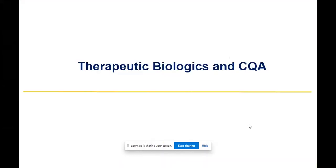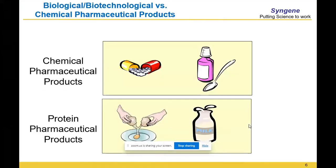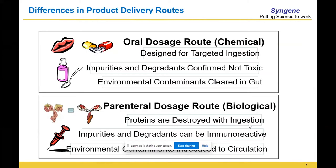When we talk of therapeutic biologics, you have got chemical pharmaceuticals, protein pharmaceuticals, oral dosage routes, or parenteral dosage routes. When we talk of the oral dosage route, at least you have some safety factors taken care of by the body itself, because the drug has to go through your digestive tract and deal with a very strong acid in the stomach.